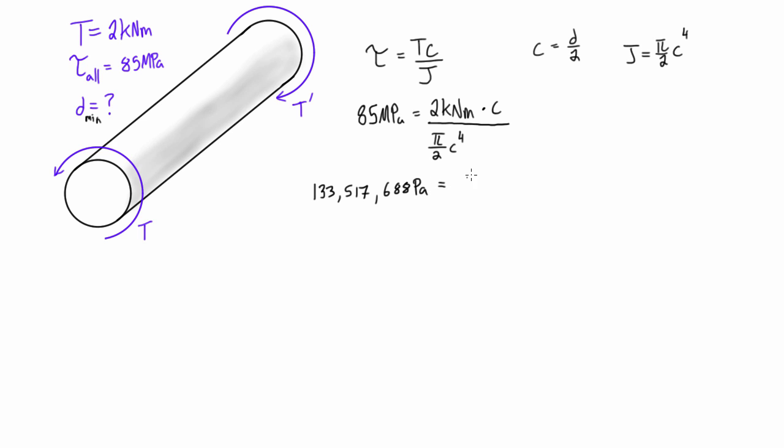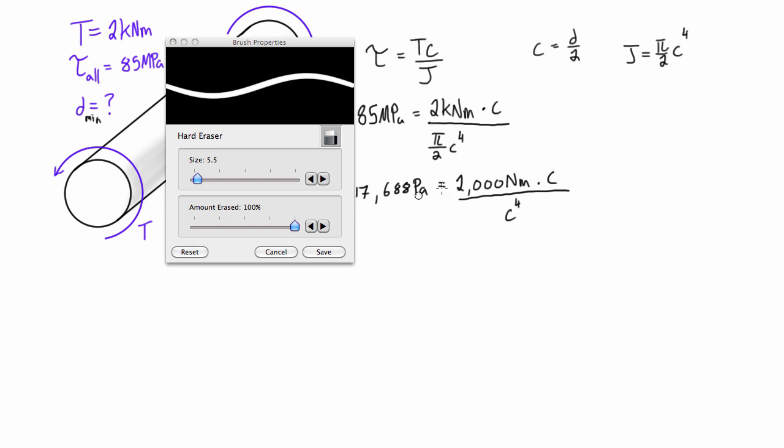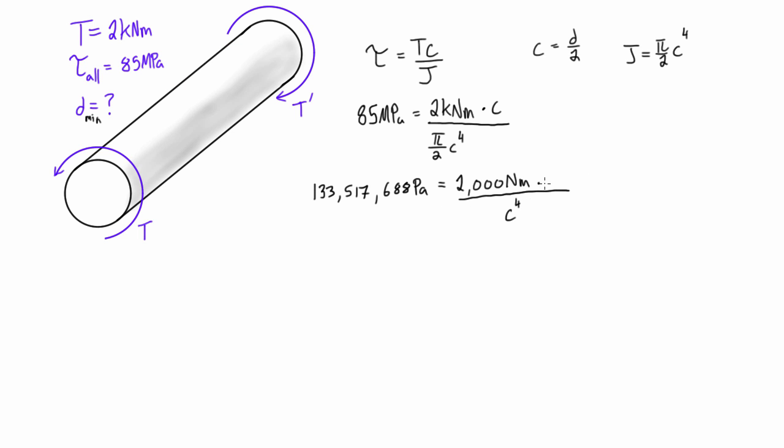And I'm going to convert kilonewton meters to newton meters, so this is equal to 2000 newton meters. And then we're still left with times c here, and this is in meters, and divided by c to the fourth. So we can actually divide out this c here and reduce this to c to the power of three.